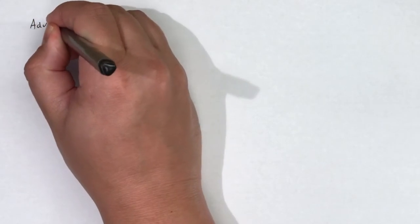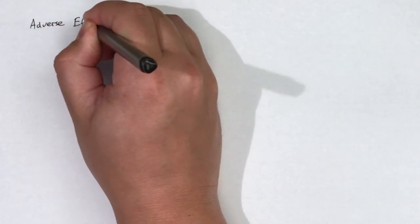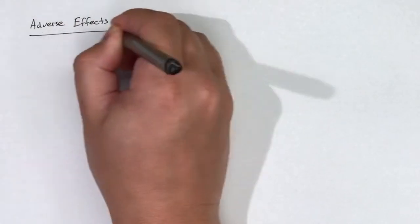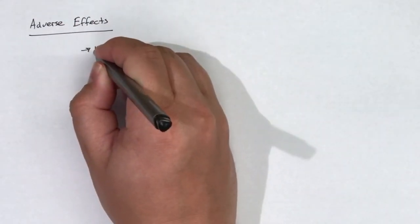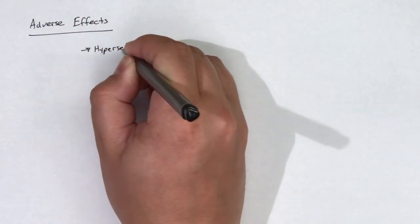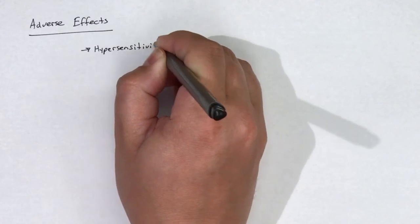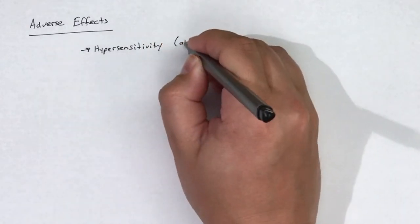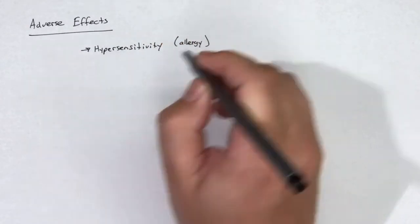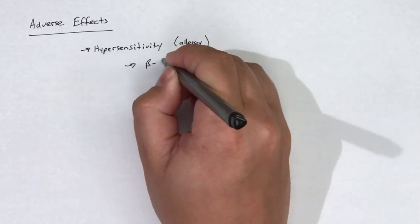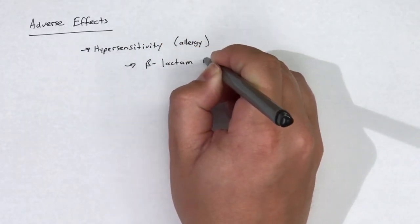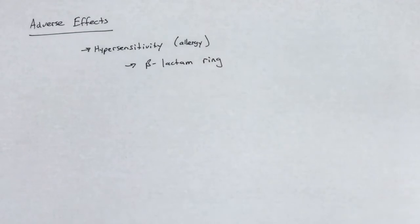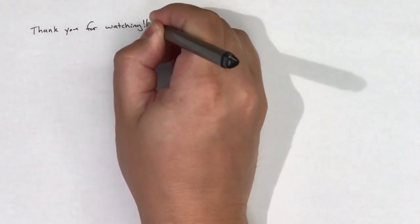The adverse effects of fifth-generation cephalosporins are similar to the adverse effects described in the cephalosporin overview video. Hypersensitivity to the beta-lactam ring remains the most common adverse effect.